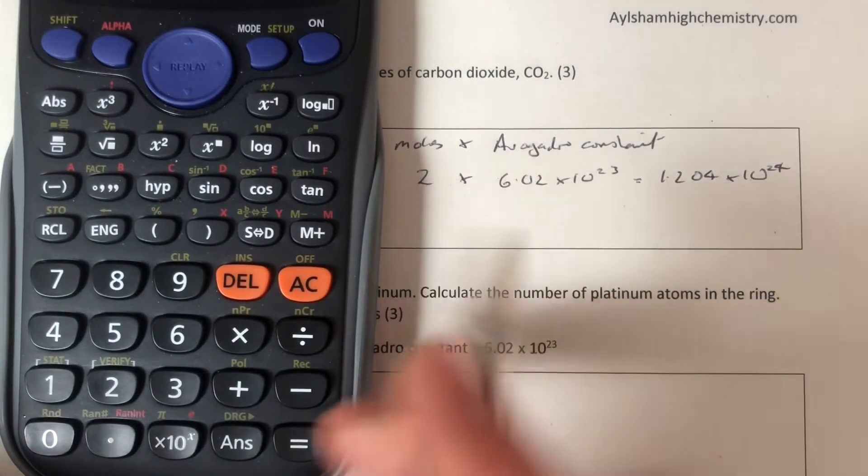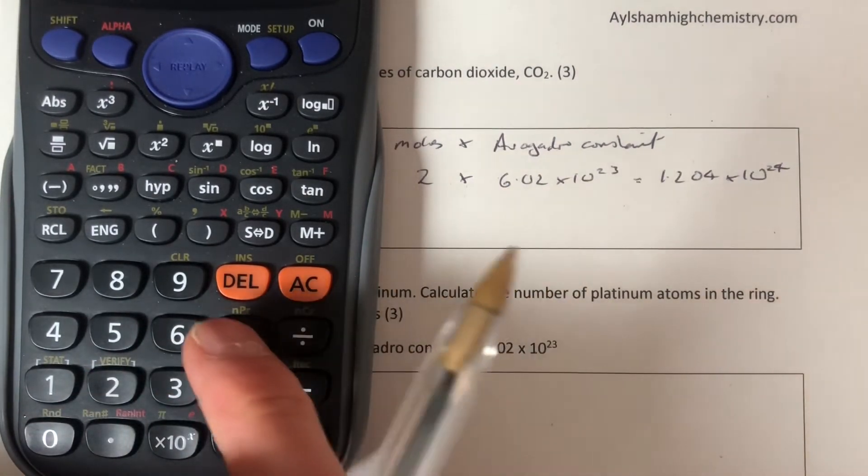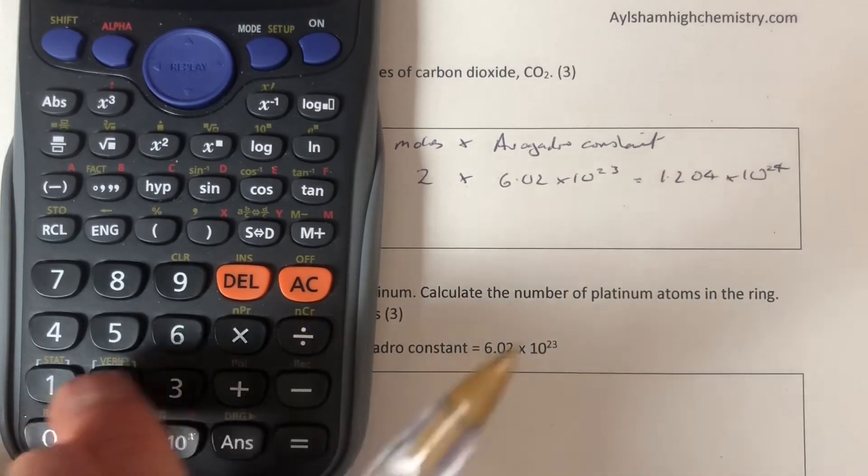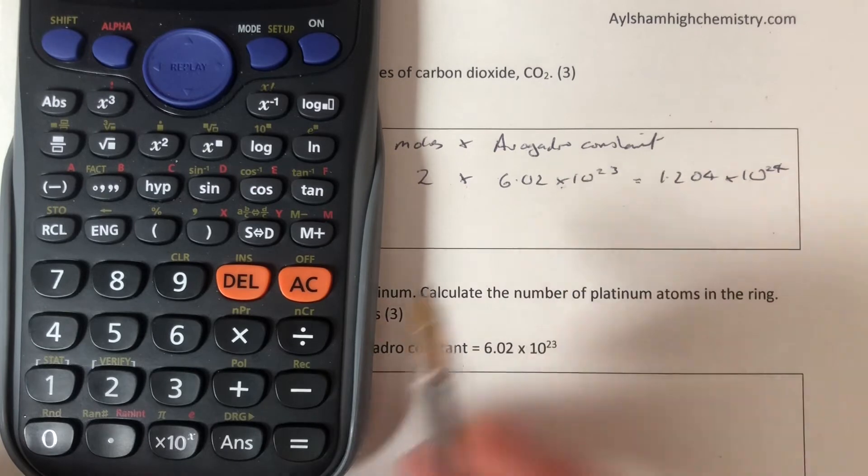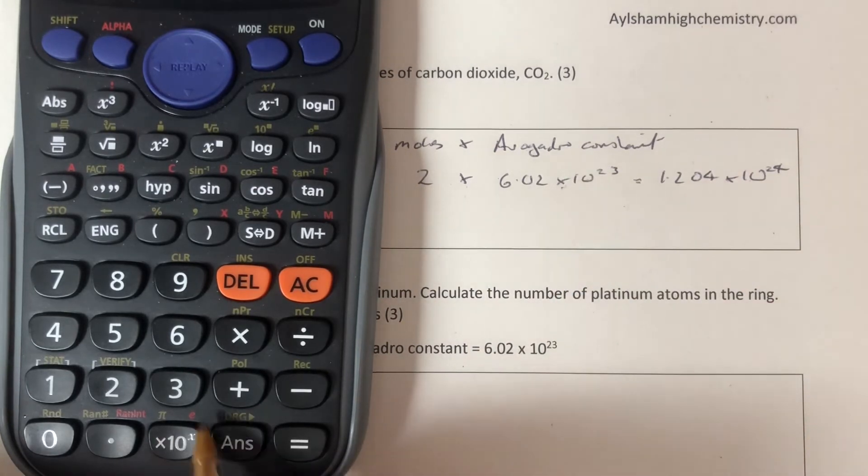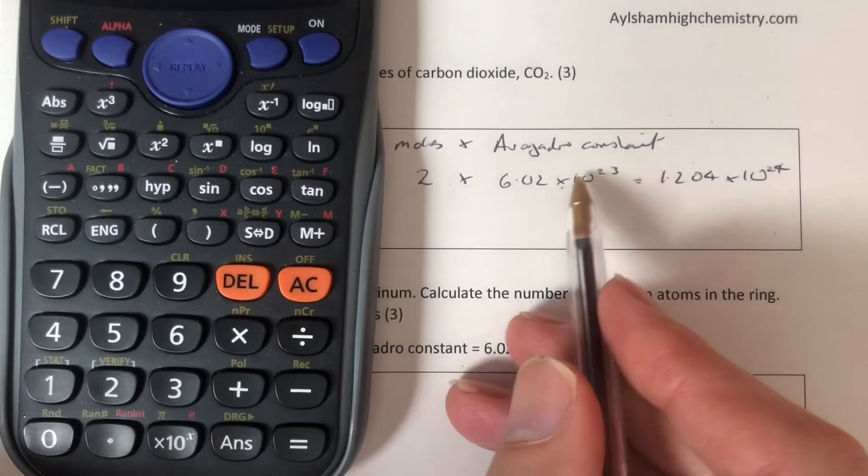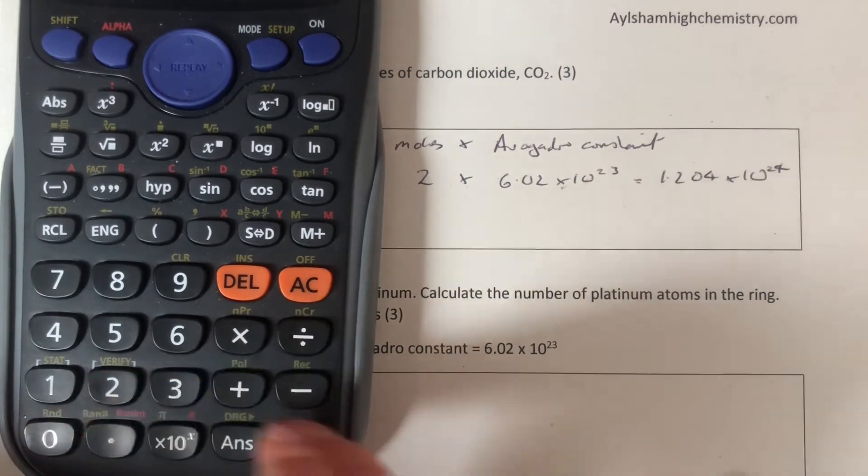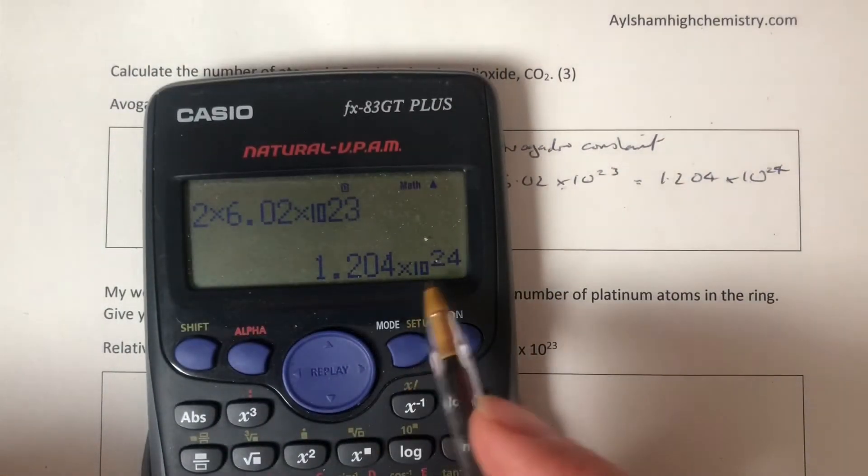But I'm sure you're not going to do this in your heads, so let's do it in a calculator. We need to do two times—that times there is the multiply button—6.02. This is not the multiply button; this is the times 10 button. On this calculator it is here. That might be called exp on your calculator, times 10 to the x. That's now done the times 10, and now we do 23. 23 equals 1.204 times 10 to the 24.